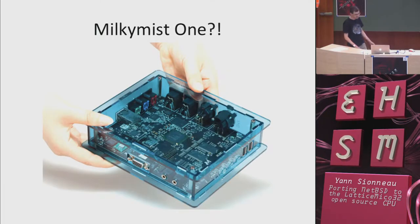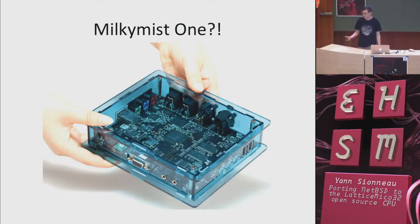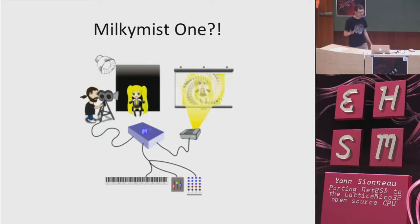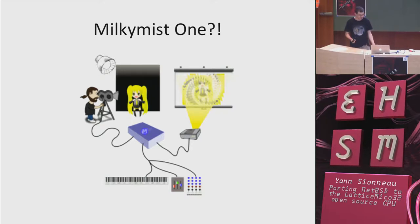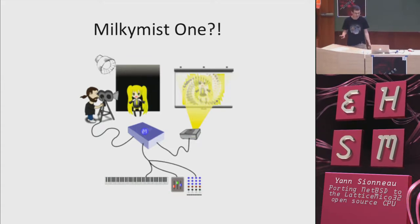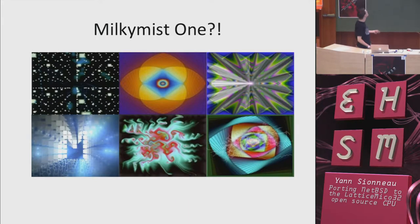Milky Mist One: what is it? It's an electronic device aimed at generating artistic video performance during parties or concerts. You can capture a live performer and project them against a wall or screen, applying video effects like rotations, zoom in, zoom out, blurring, etc. You can also control lights and sound, and everything in the box can be synchronized with the music.